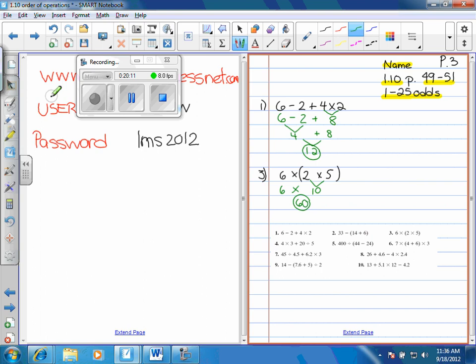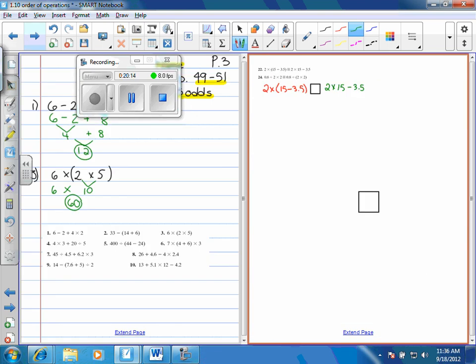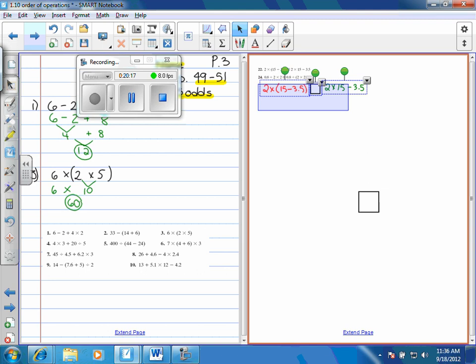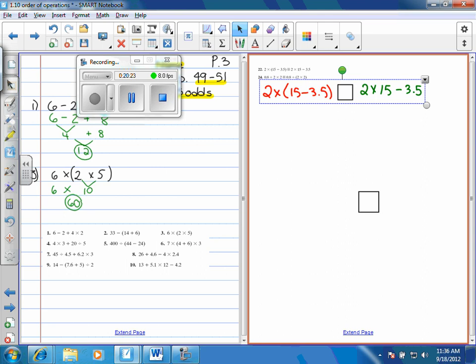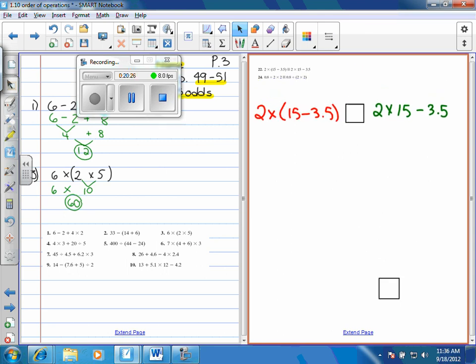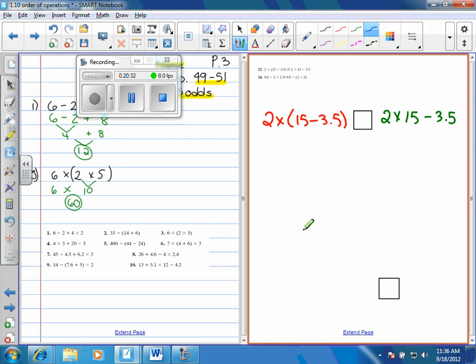So when you get to problems in the 20s, you're going to see something like, this is an example of 22. It's not the problem you have tonight. I don't want to do your problem, because it would take all the fun away. Okay, but problem 22 has two parts with a box in it, and it says, use, what do you think it says? Yeah, Sophia? Right, use a less than, greater than, or an equal sign, right? So you have to figure out, good job, what goes in there, what goes in that box.